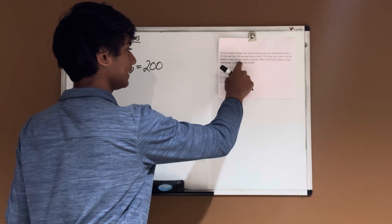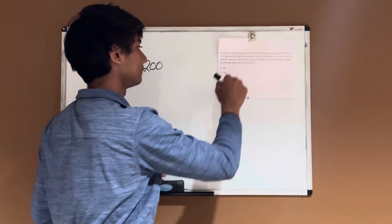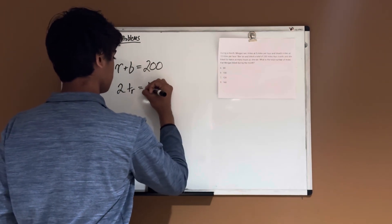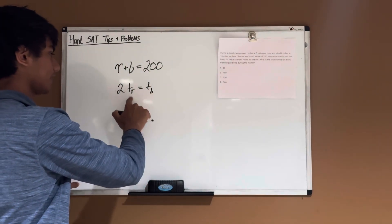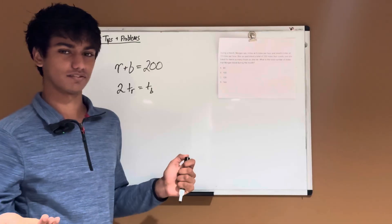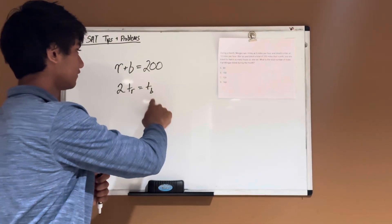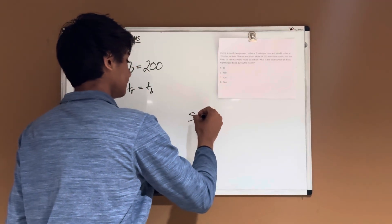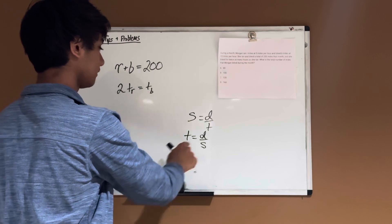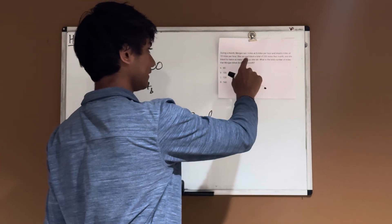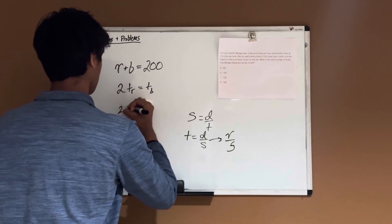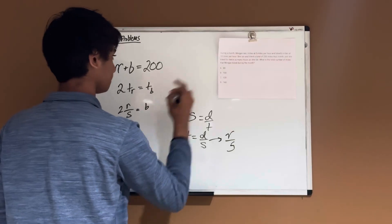It says she biked for twice as many hours as she ran — so this is about time. The time of biking is twice the time of running: two times time of running equals time of biking. We can represent TR and TB in terms of R and B using the formula: speed equals distance over time, so time equals distance over speed. Time running is R over 5, so two times R over 5. Time biking is B over 10. So our second equation is 2R over 5 equals B over 10.